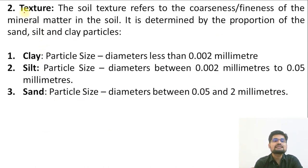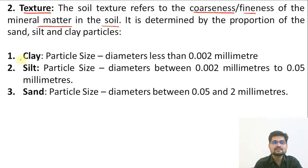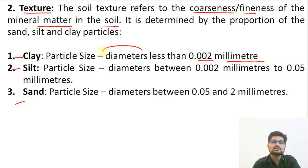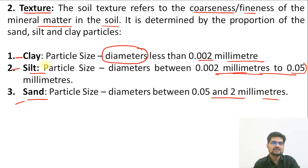The next important characteristic of soil is texture. Soil texture refers to its fineness or coarseness — how fine the material is. We can divide it into three parts: clay, silt, and sand. Clay has a diameter of 0.002 millimeters, which is the smallest. Silt ranges from 0.002 to 0.05 millimeters, and sand is the coarser part at 0.05 to 2 millimeters.